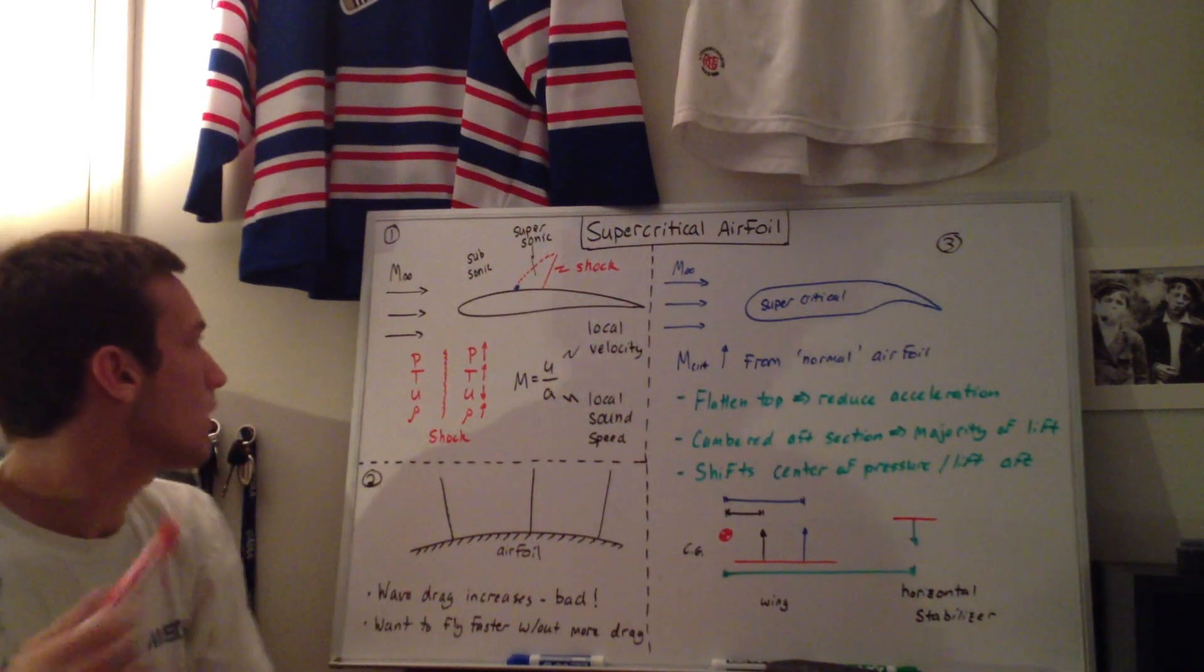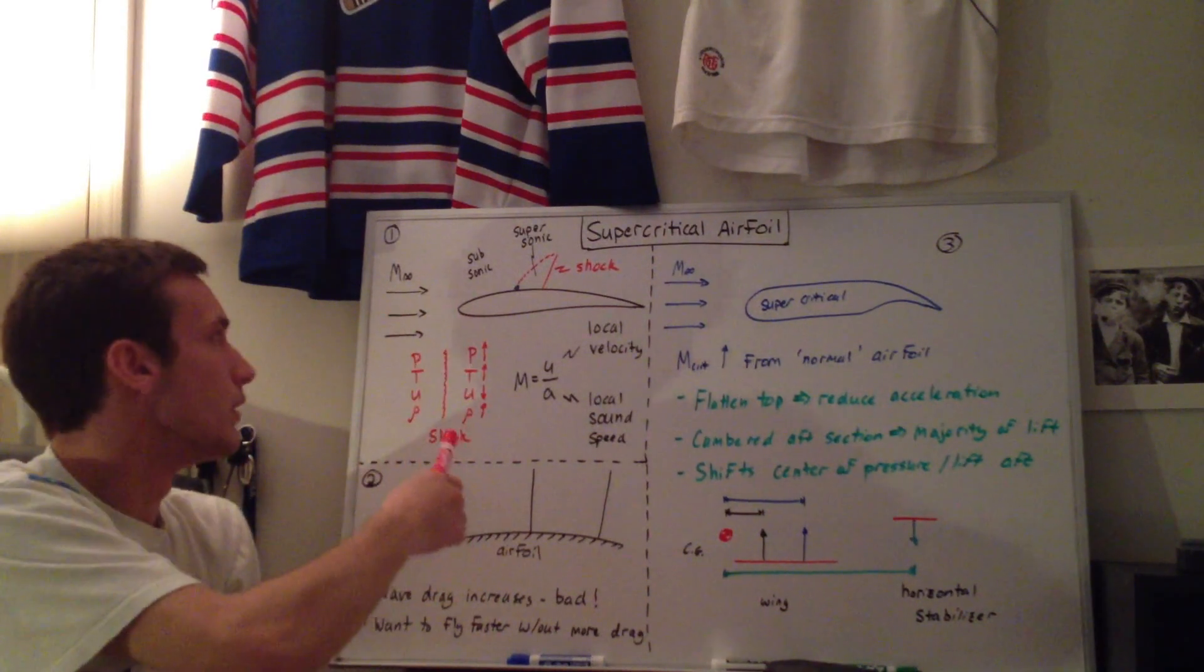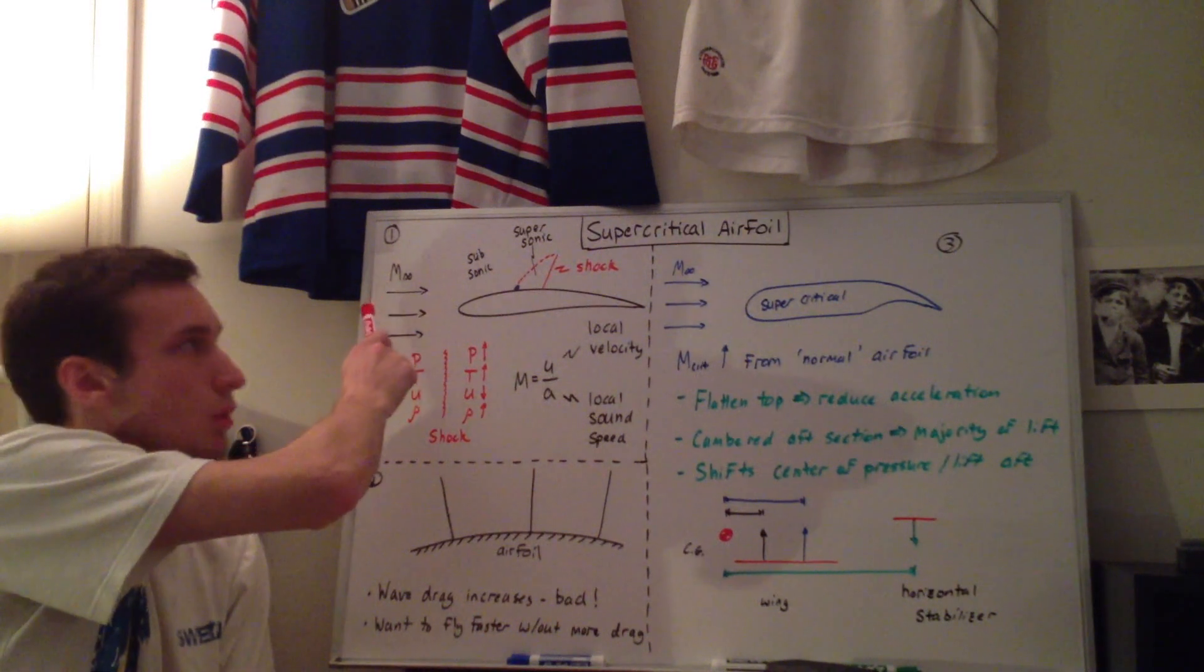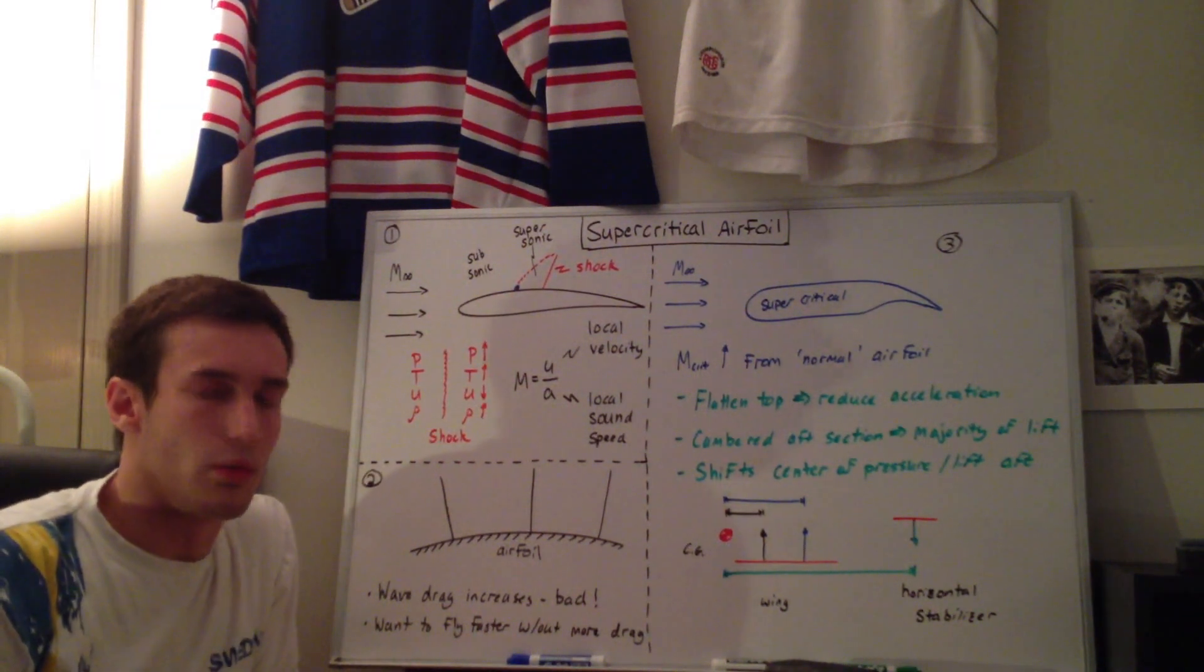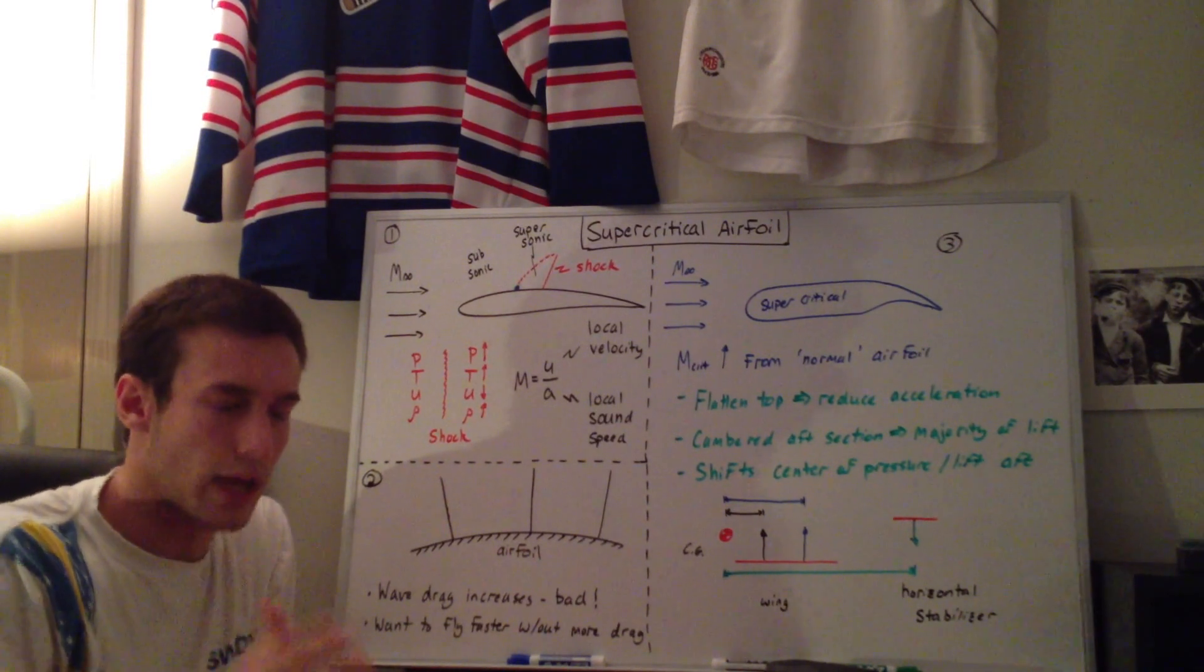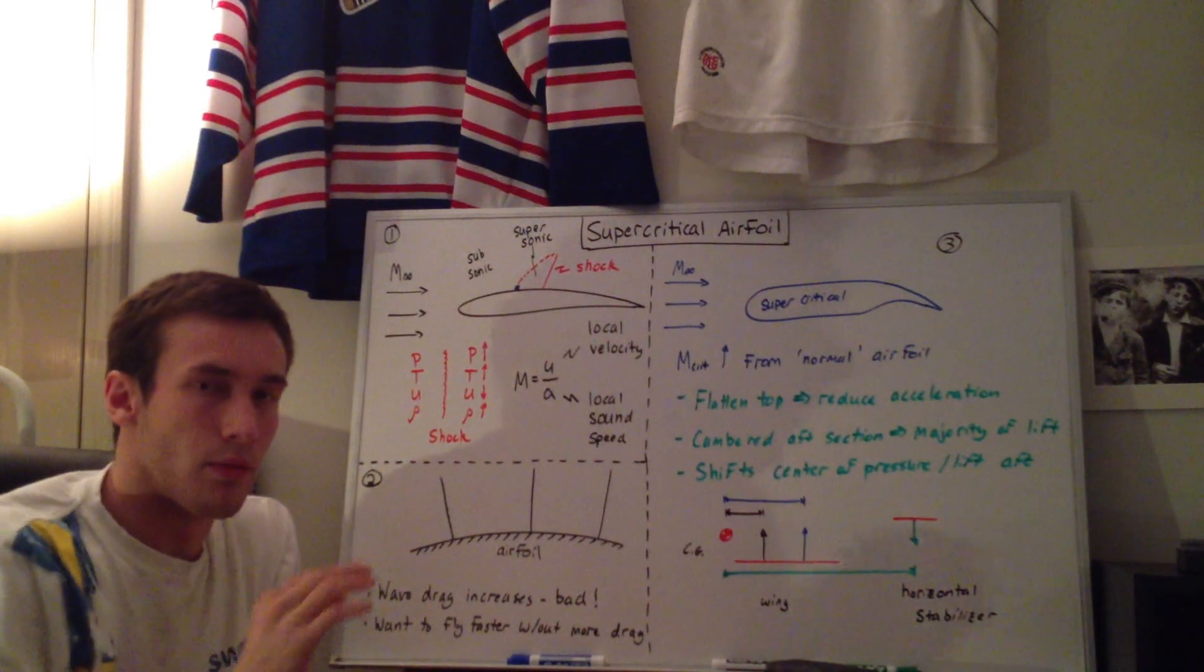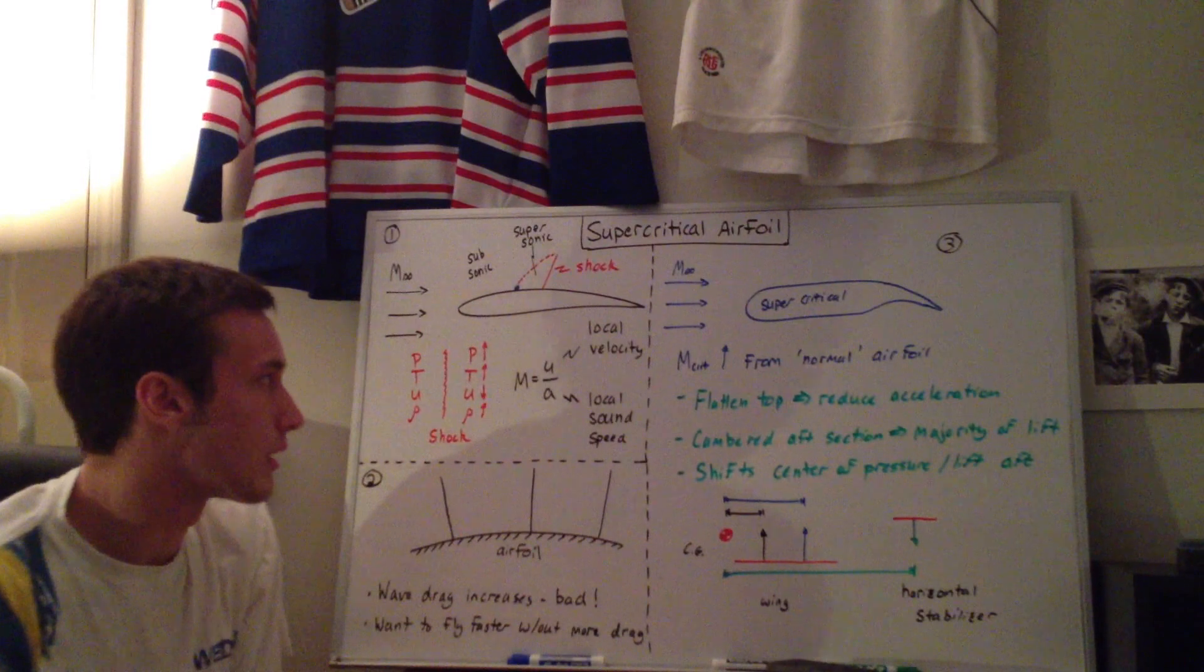So the critical Mach number, or M sub crit, is defined as the freestream Mach number where the first point of supersonic flow is seen on the airfoil. So when there's a point on the airfoil when that is at Mach 1, that freestream Mach number is the critical Mach number.